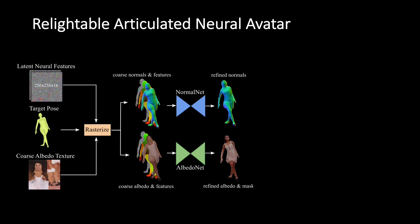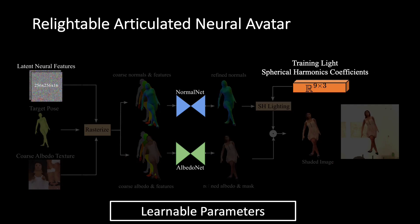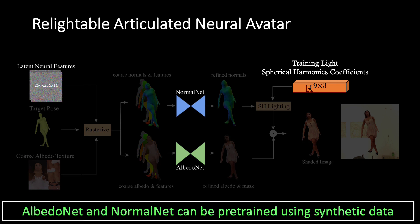Finally, given the target light, we use spherical harmonics lighting to obtain the shading image, which is applied to the refined albedo map to obtain the final shaded image. During training of the avatar, we jointly optimize the latent neural features, NormalNet, AlbedoNet, and spherical harmonics coefficients of the unknown lighting environment. We also propose to pre-train AlbedoNet and NormalNet on a large synthetic dataset and show that it leads to significant improvements.